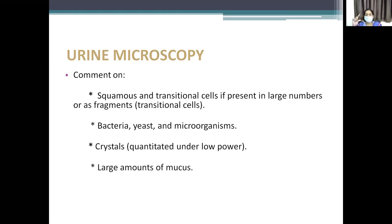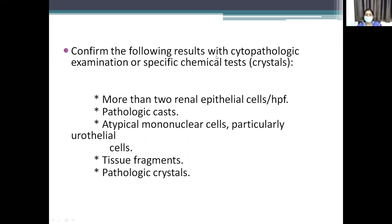When you get the urine, you also comment on physical characteristics — color and volume. Check pH using litmus paper or a reagent strip test, and specific gravity using a urinometer. Comment on squamous and transitional cells if present in large numbers, presence of microorganisms, crystals, and large amounts of mucus. Confirm the following results with cytopathological examination: crystals, more than two renal epithelial cells per high-power field, pathological casts, atypical mononuclear cells particularly urothelial cells, tissue fragments, and pathological crystals.